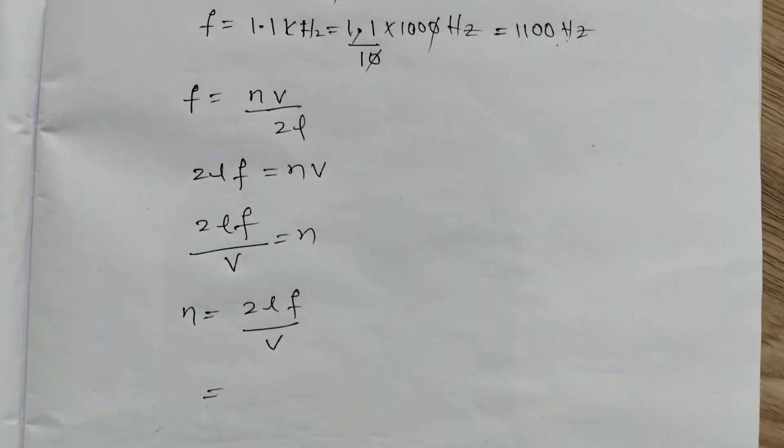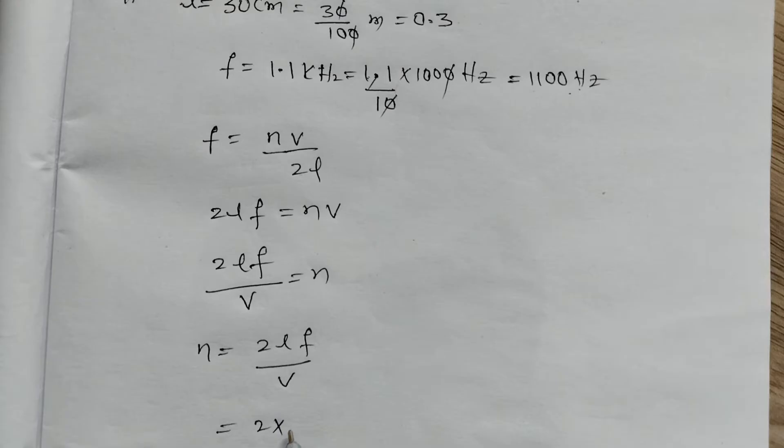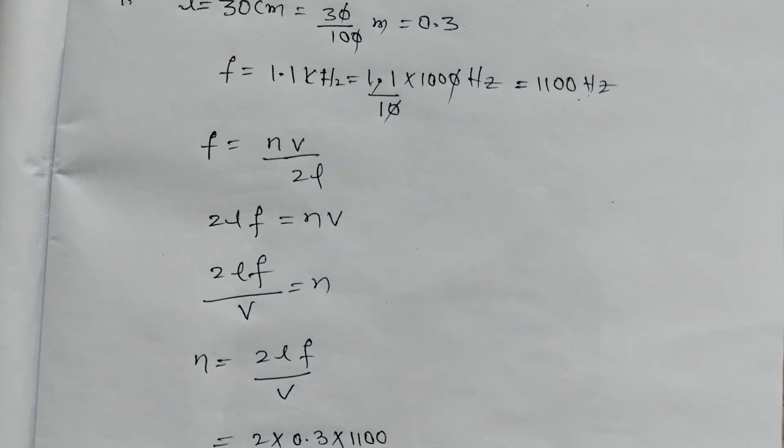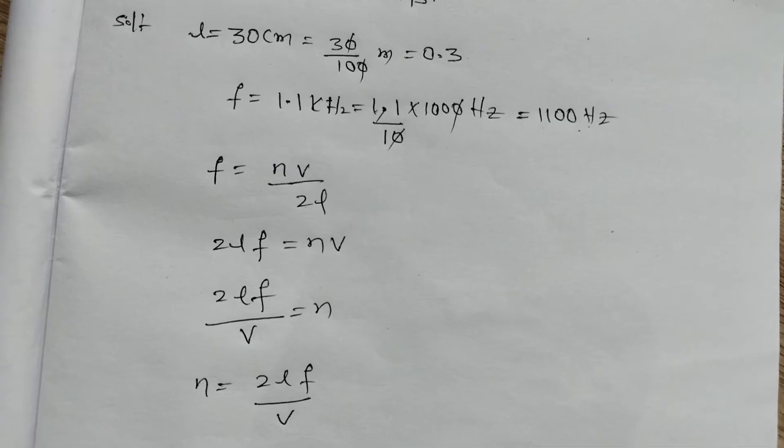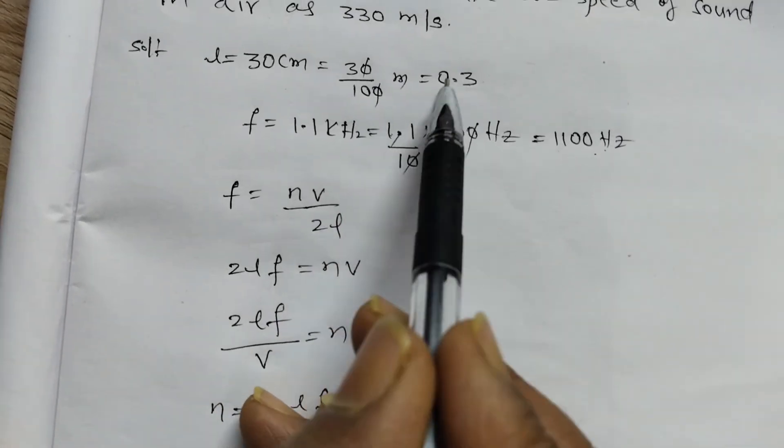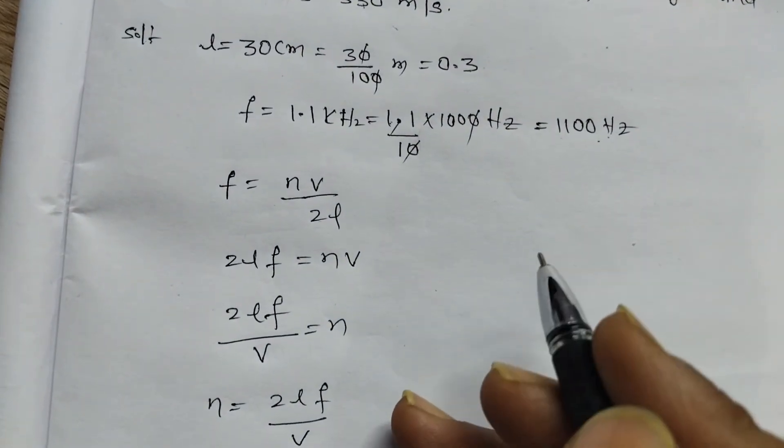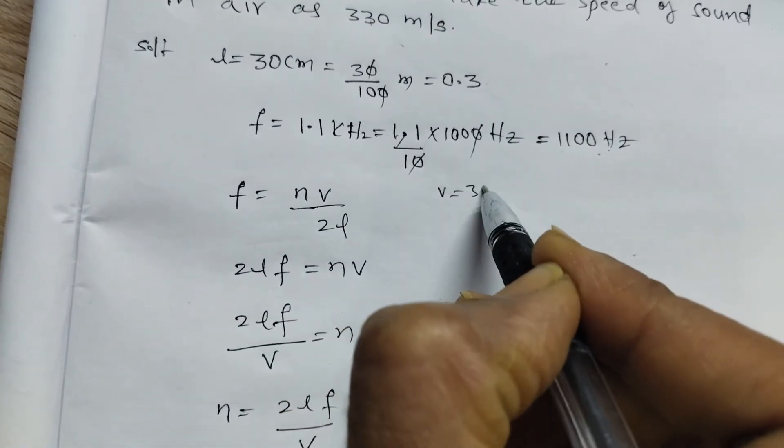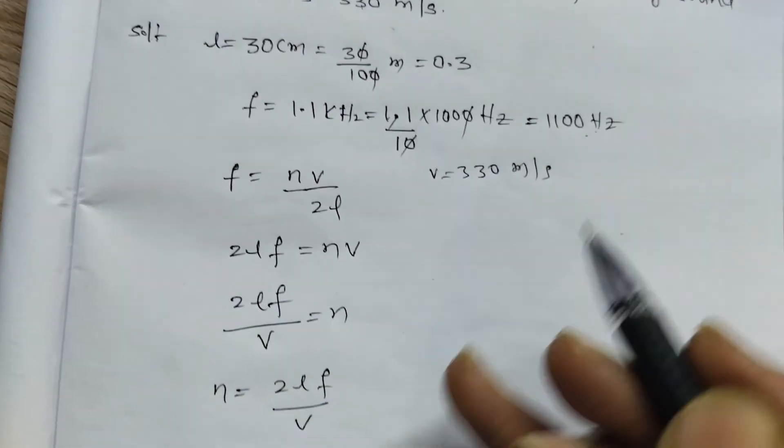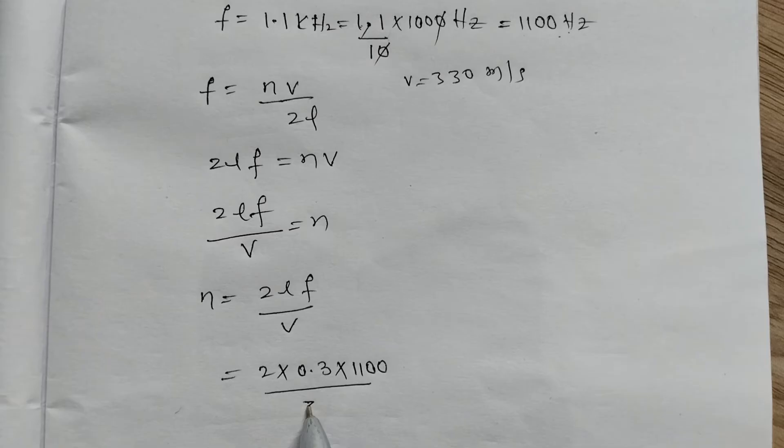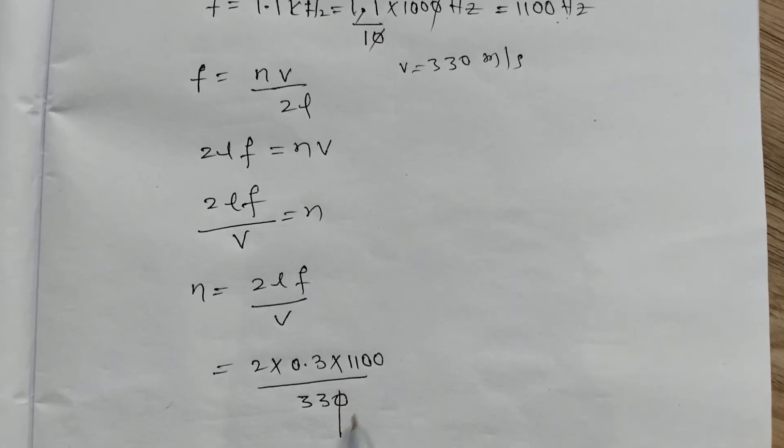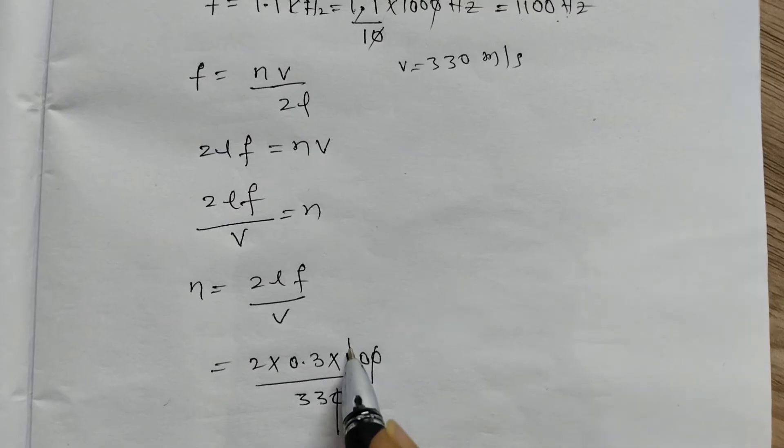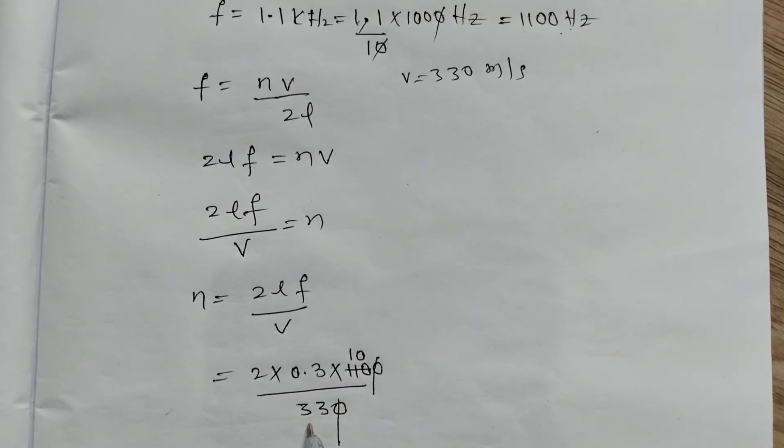Substituting values: n equals 2 into L value 0.3, into f value 1100, divided by velocity. Velocity is given as 330 meter per second. So: 2 times 0.3 times 1100, divided by 330.